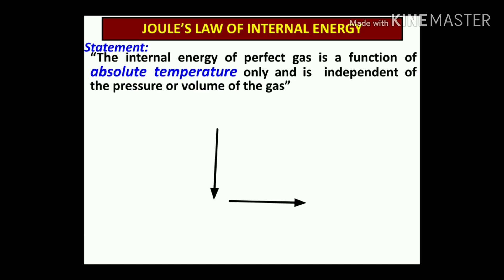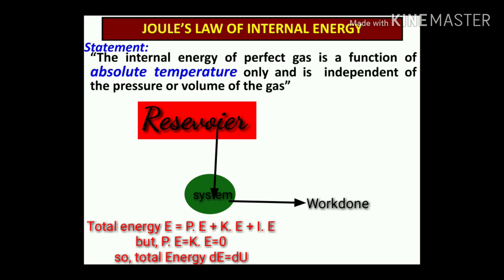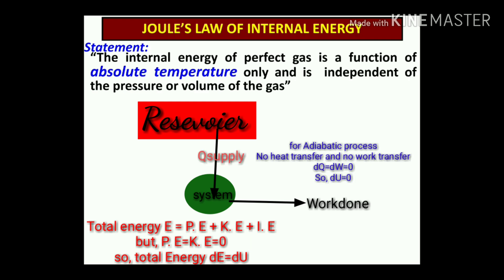Starting with the first law of thermodynamics: one reservoir at higher temperature supplies heat to the system. The total energy stored by the system equals heat supplied minus work done by the system. This remaining portion of energy is stored in the form of potential energy, kinetic energy, or internal energy.